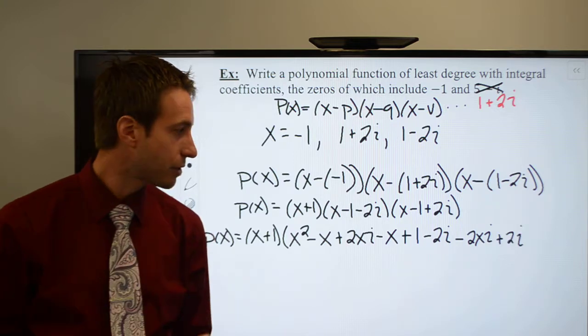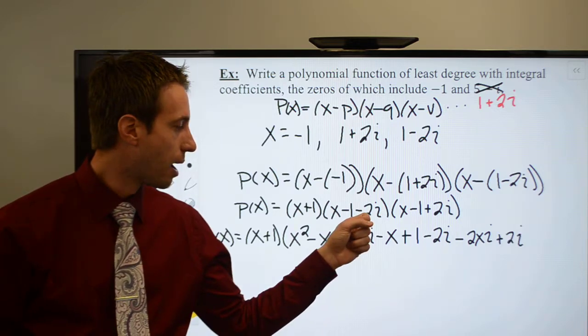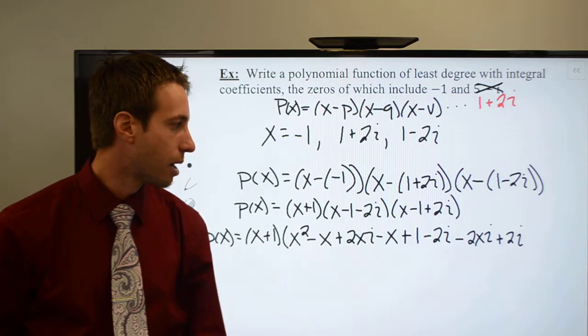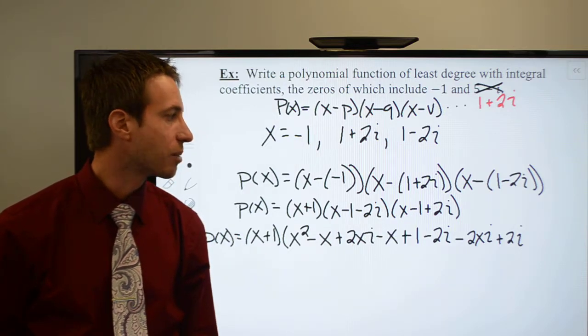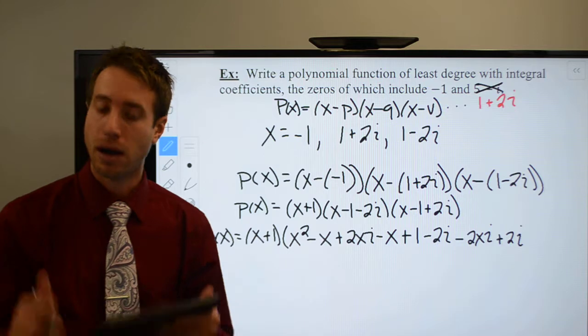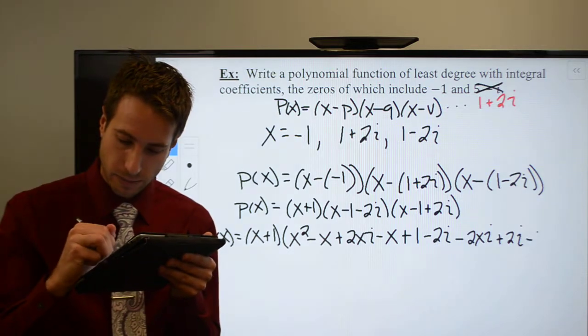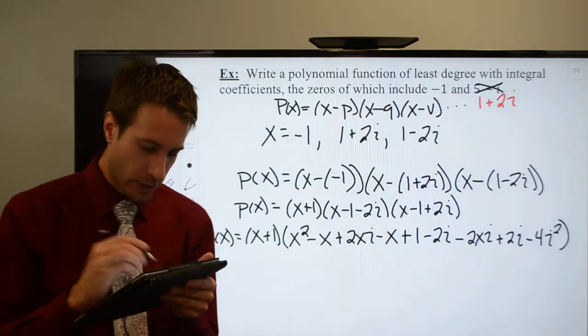Look at that. I don't really have to squeeze. Yay! And that's going to give me negative 2i times positive 2i, which is going to be negative 4i squared. All right, here we go.